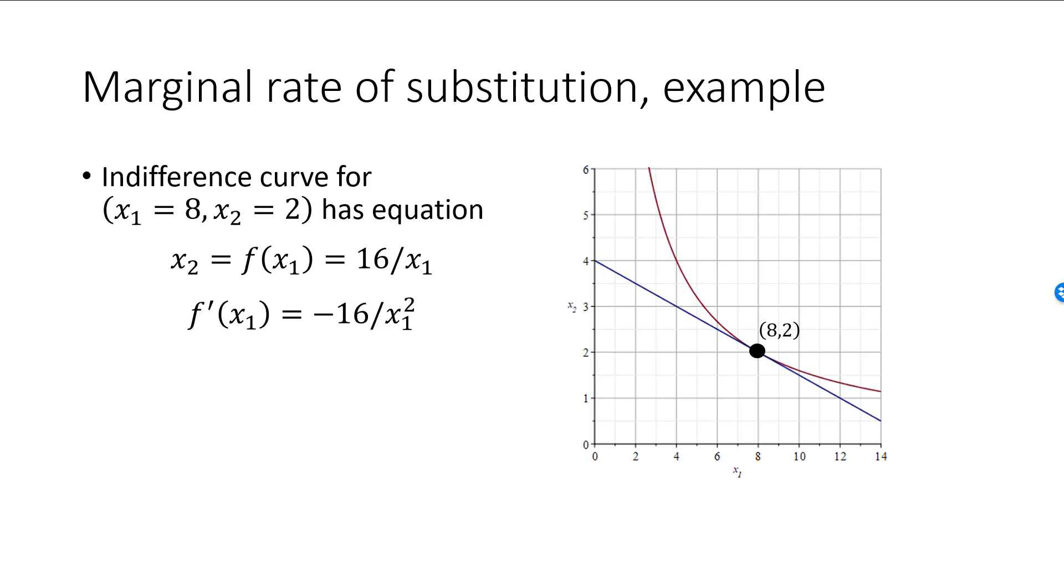f prime x1 is equal to minus 16 divided by x1 squared. Plug in x1 equal to 8, and we find that MRS is equal to negative 1 over 4 at this point. This is the slope of the blue line.